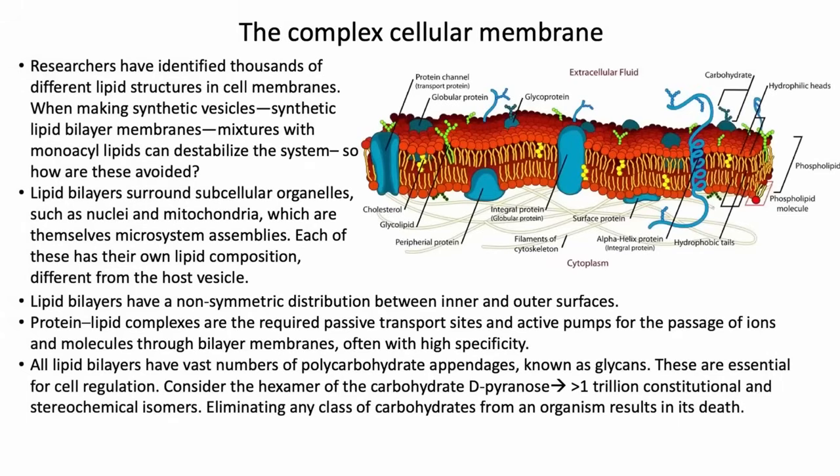Lipid bilayers also have a vast number of carbohydrate appendages. These are called glycans — the artist is just showing us a few of these, but a cell is covered with them. This is how cells recognize each other: by these carbohydrate assemblies. They have recognition patterns so you can tell one cell from another.